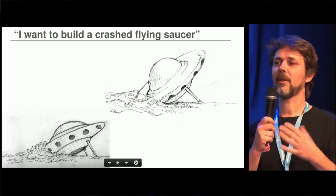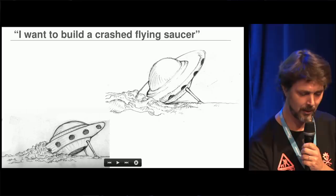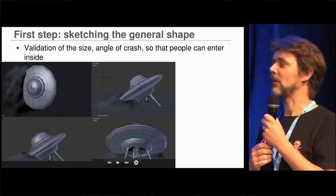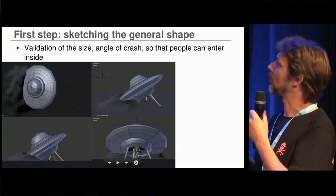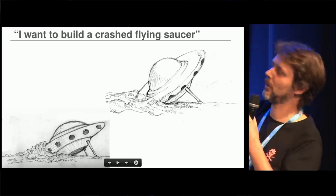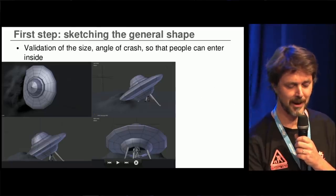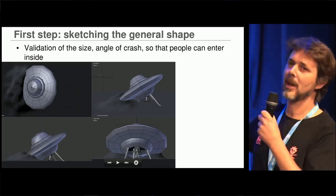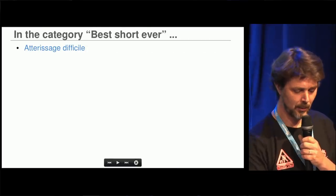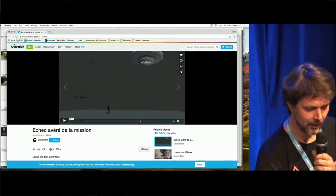He wanted people to enter the flying saucer without being harmed by it. The first step was to design the shape — the size and angle of the crashed flying saucer. While we were having beers I made a small video. The work in Blender was basic but very fast — even for structural design I prefer Blender. The whole frame used a lot of booleans.